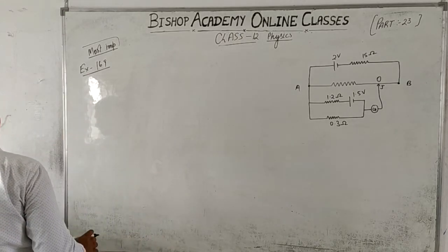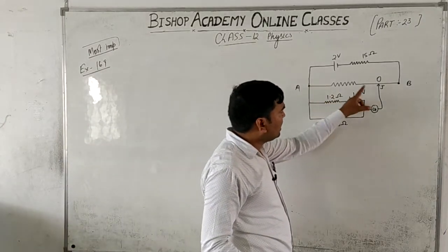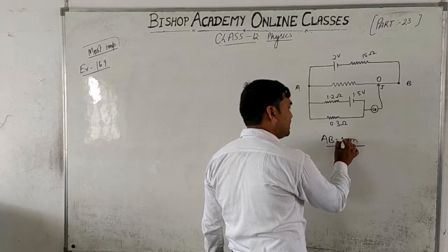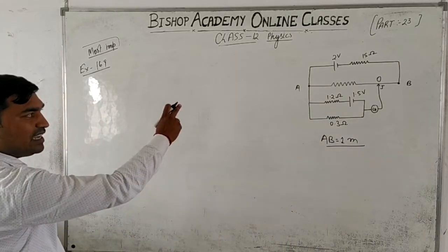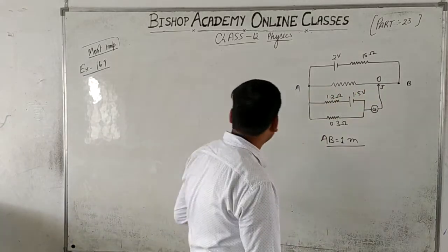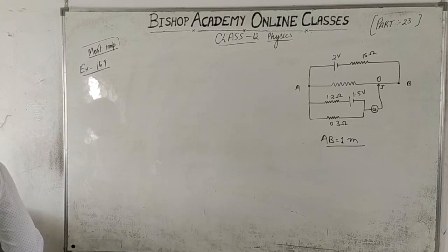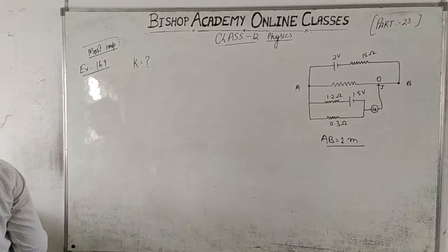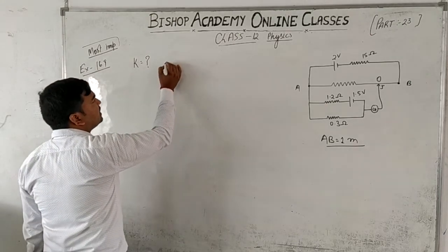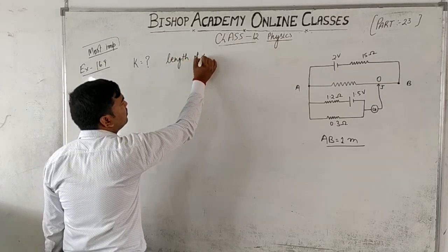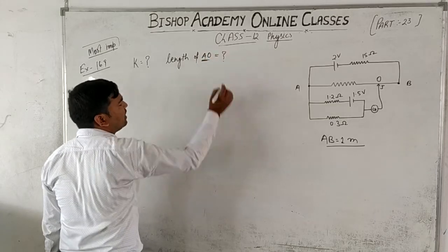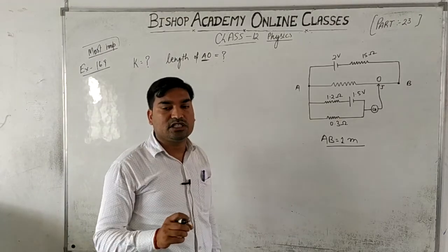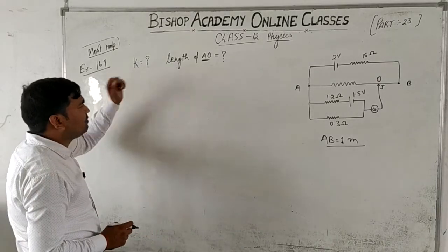This is the figure given. Now let's read the question. AB is a 1-meter long uniform wire. So AB has a length of 1 meter. Other data are shown in the figure. We need to: (1) calculate potential gradient along AB, and (2) find the length AO when the galvanometer shows no deflection — that is, the null point. This question is based on the internal resistance application concept of potentiometer that we studied earlier.